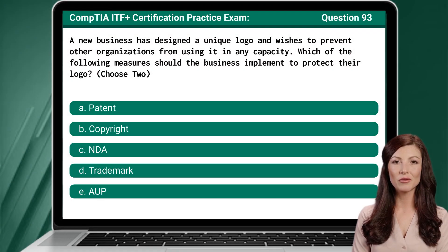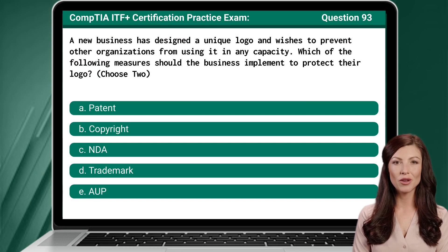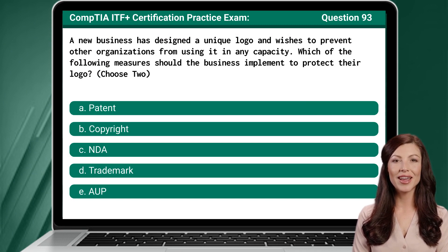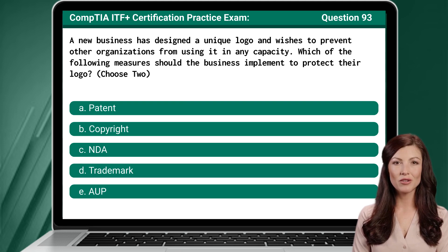Question 93. A new business has designed a unique logo and wishes to prevent other organizations from using it in any capacity. Which of the following measures should the business implement to protect their logo? Choose two.